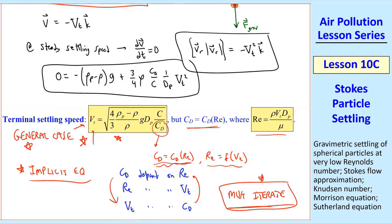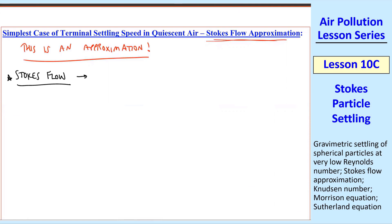What we're going to do, instead of using Morrison's equation, we'll use the simplified equation for Stokes flow. And if you recall for Stokes flow,